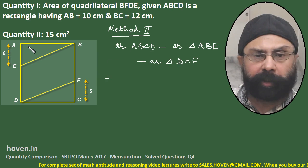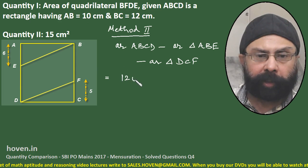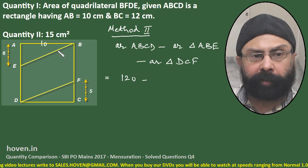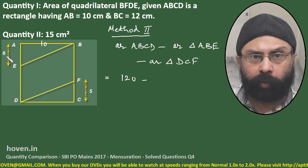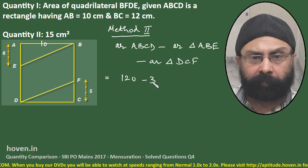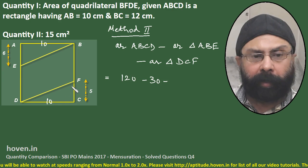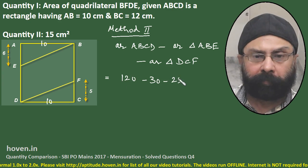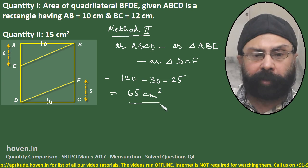We can write it equal to: ABCD is a rectangle with sides 10 and 12, so this is 120. Minus this triangle: area is half of base into height — half of 6 is 3, into 10 gives 30. Minus likewise for this triangle DCF: half of base into height — half of 10 is 5, into 10 gives 50 by 2, which is 25. This again comes to 65 square centimeters, which is the required answer.